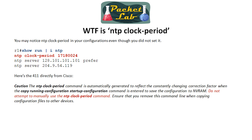If you're looking at your running configuration for NTP settings, you may see a line called `clock period` that you didn't configure. What's happening is the Cisco device keeps track of a correction factor for NTP and writes it to the configuration. Don't set this manually. The Cisco documentation also cautions against copying this line when applying a saved configuration to another device.